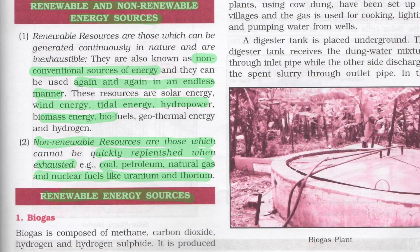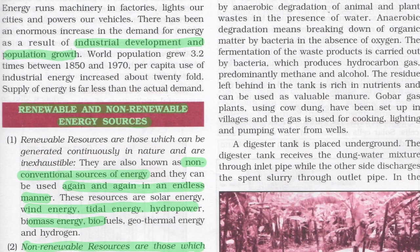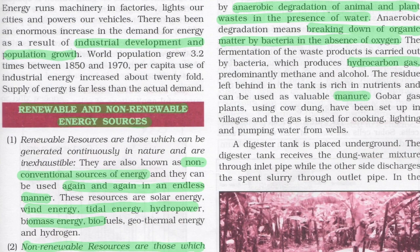Biogas is a renewable energy source composed of methane, carbon dioxide, hydrogen, and hydrogen sulfide. It is produced by anaerobic degradation of animal and plant wastes in the presence of water — meaning air must be absent. Anaerobic degradation means the breaking down of organic matter by bacteria in the absence of oxygen. Fermentation of the waste by bacteria produces hydrocarbon gas, and the residue left behind in the tank is rich in nutrients and can be used as manure.